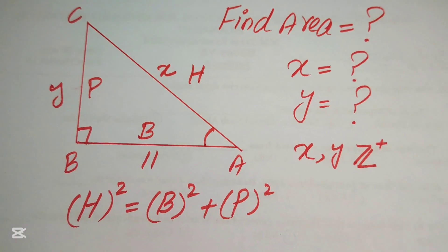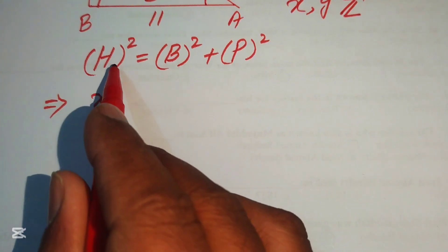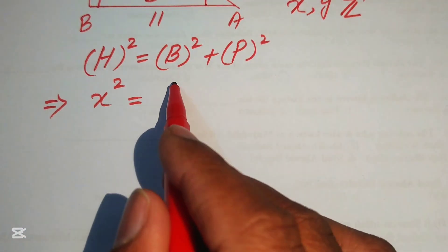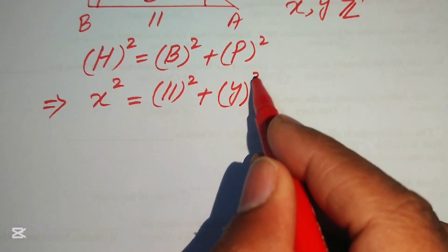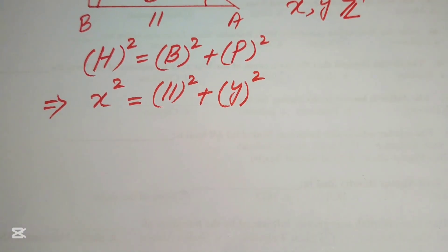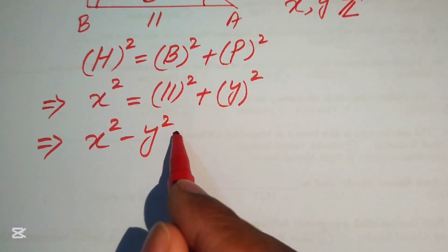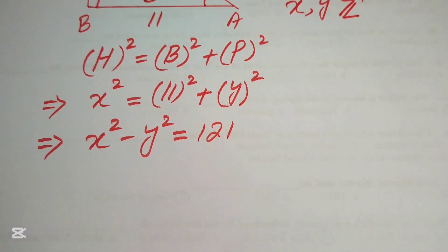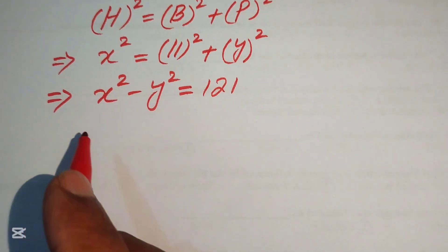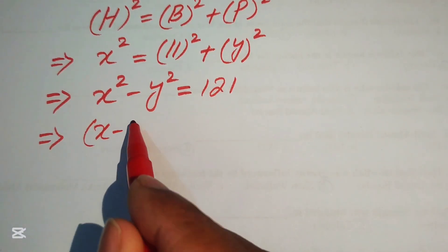Now we substitute the values into the Pythagorean theorem. The hypotenuse is x, so we have x squared. The base is 11, so we have 11 squared. The perpendicular is y, so we have y squared. Moving y squared to the left-hand side gives us x squared minus y squared equals 11 squared, which equals 121.